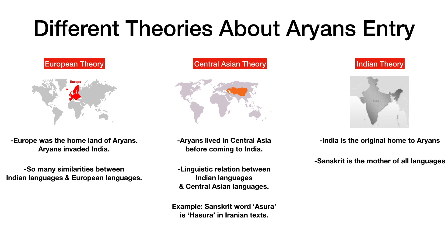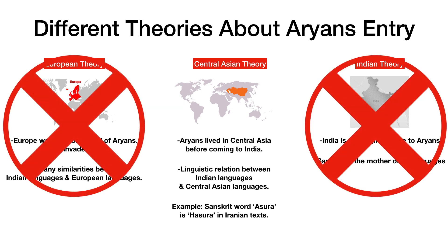The question is which of these theories is correct. Archaeologists using modern tools came to a conclusion that Aryans came from the now Siberian region. Archaeologists also rejected the invasion theory. According to them, Aryans migrated from southern Siberia to India.